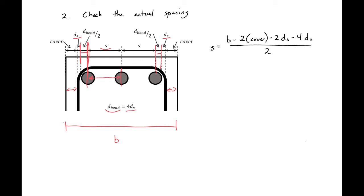So we'll have S equal to 12 inches minus two times our cover, one and a half inch, minus two times the diameter of our stirrup, half inch, minus four times the diameter of our bar, and then all divided by two spaces. So remember we have one, two spaces. So for us we'll have our actual spacing equal to four inches.